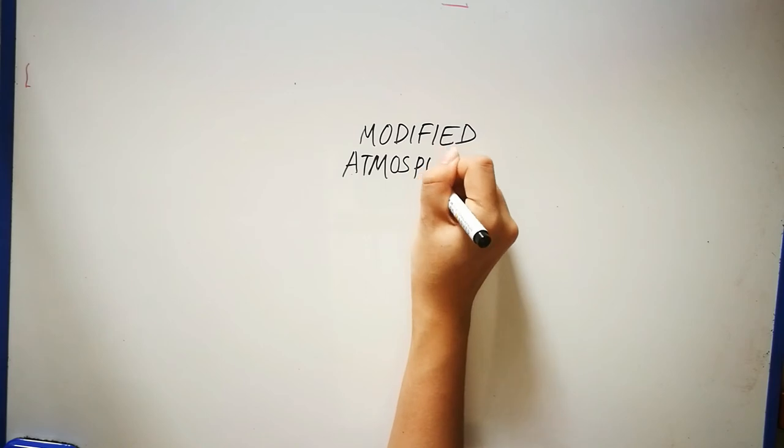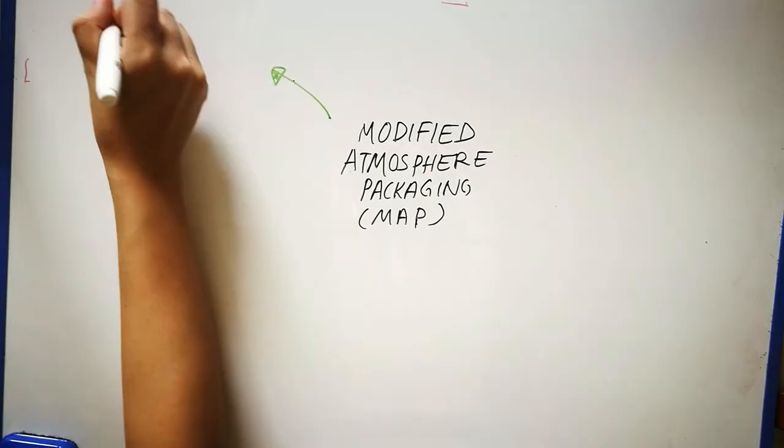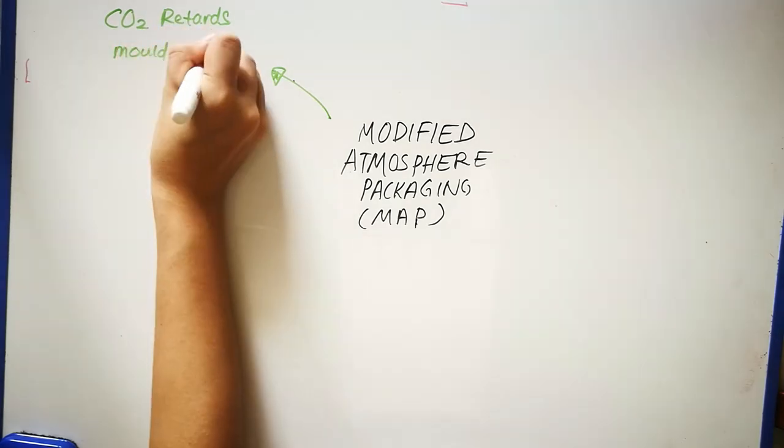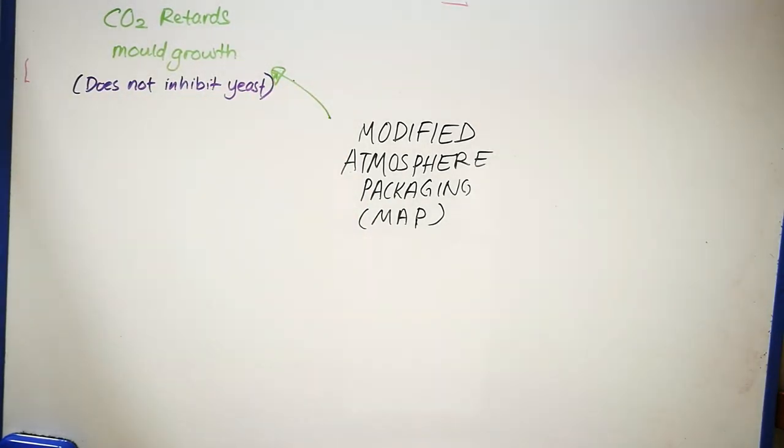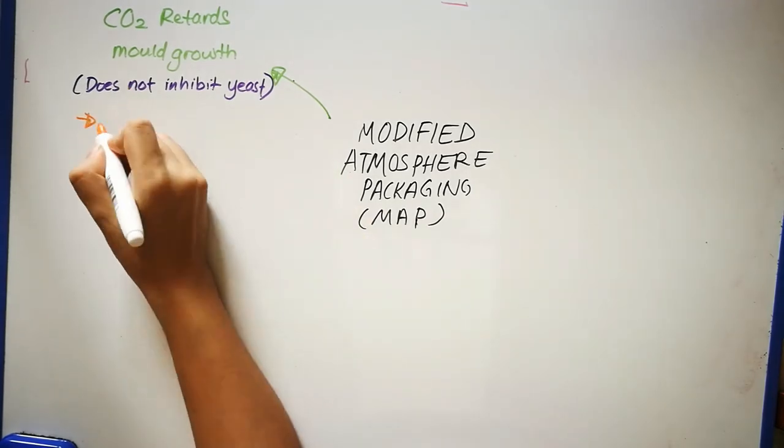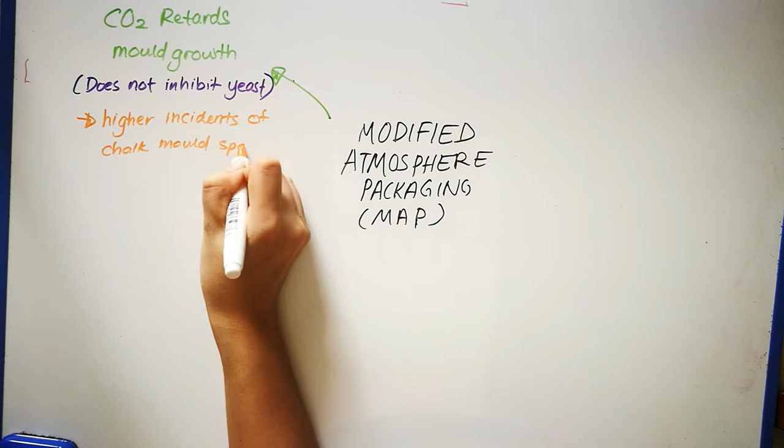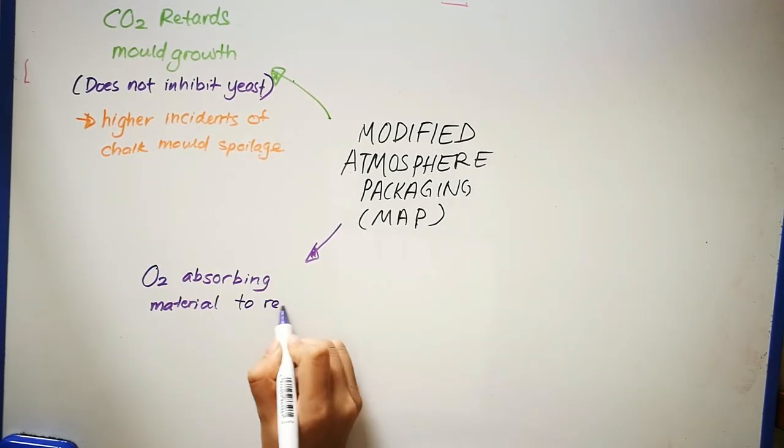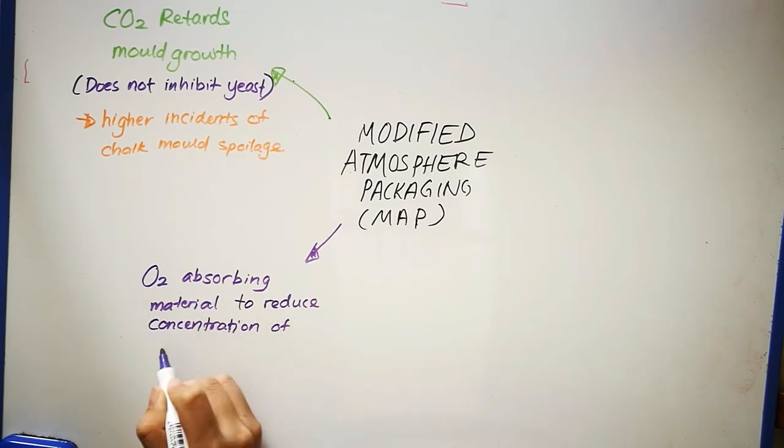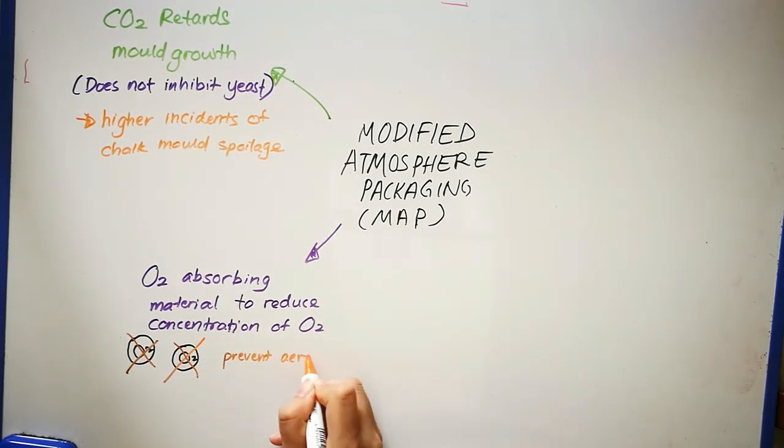Another approach is modified atmosphere packaging, which uses a high concentration of carbon dioxide, which retards the growth of molds on bakery products. However, this approach shows a higher incidence of chalk mold spoilage caused by yeast. Another approach is to use oxygen absorbing materials to reduce oxygen concentration in the pack. This method keeps bread free of mold growth and also prevents aerobic bacteria.